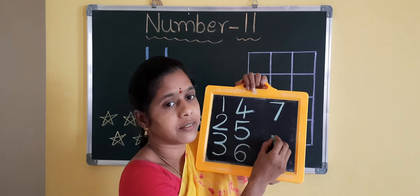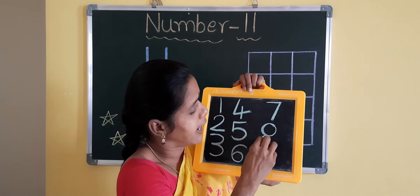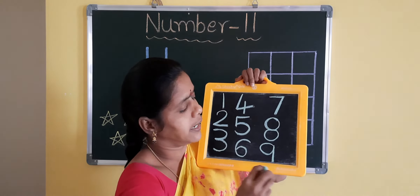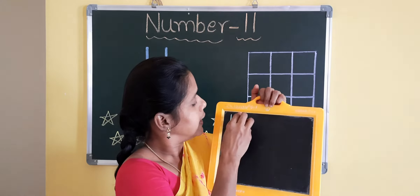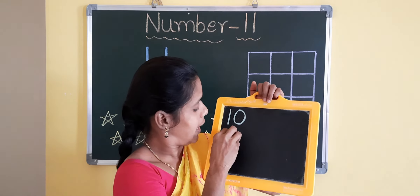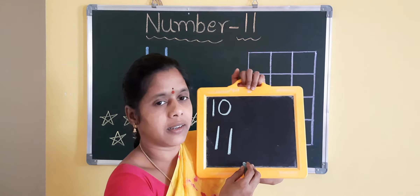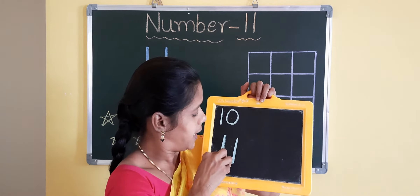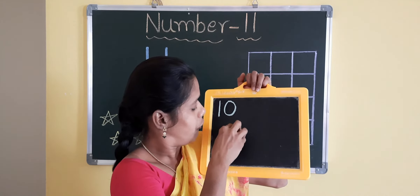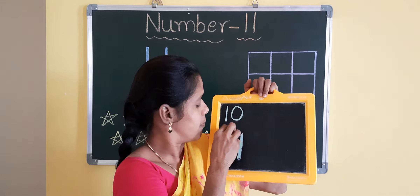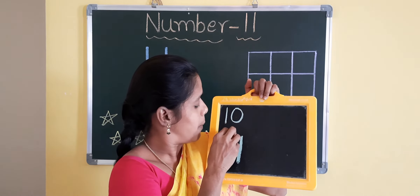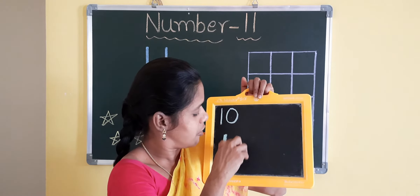7, 8, 9, 10, 11. 1 and 1 makes 11. You should practice many times on the slate. 1, 2, 3, 4, 5, 6, 7, 8, 9, 10, 11.